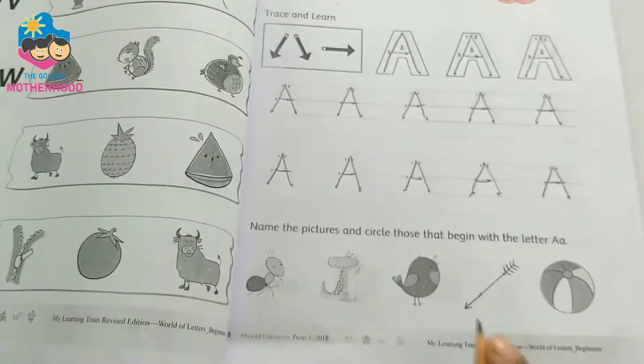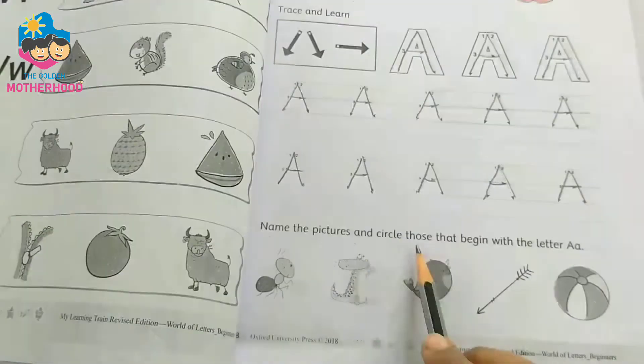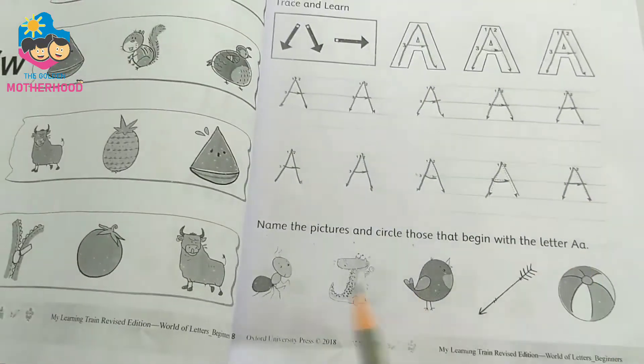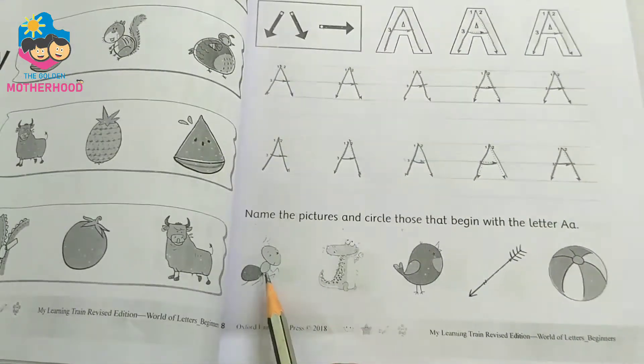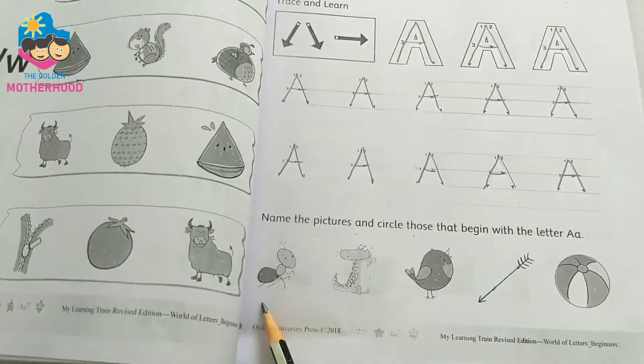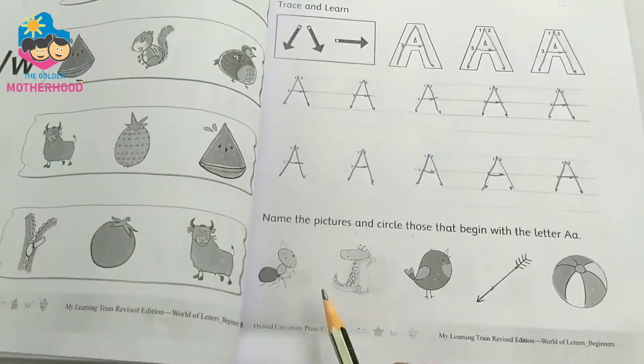Now after completing the tracing, name the pictures and circle those that begin with the letter A. A for ant. This picture begins with the letter A. So circle it.